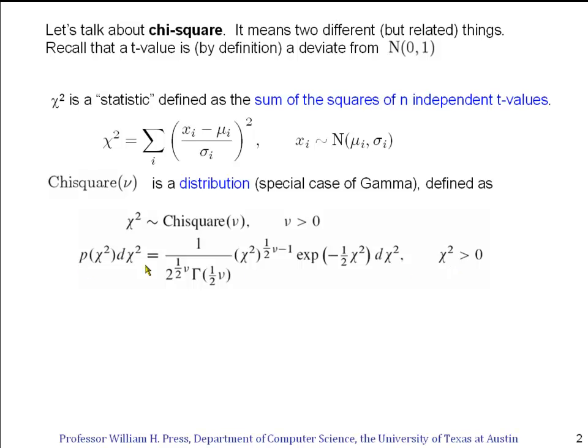You can see that this is a density that starts off at zero, rises as some power law in the value χ², and eventually falls off as some exponential in the value χ². It's a special case of the gamma distribution.